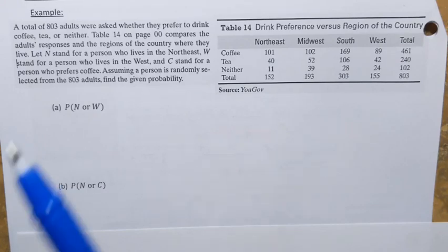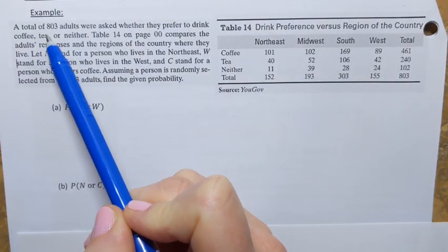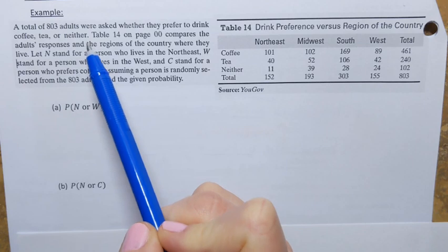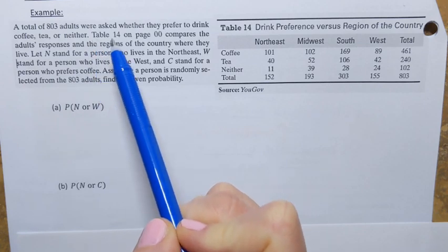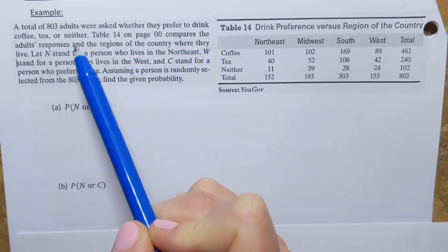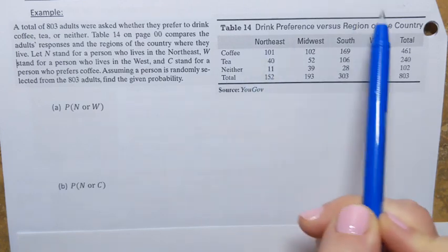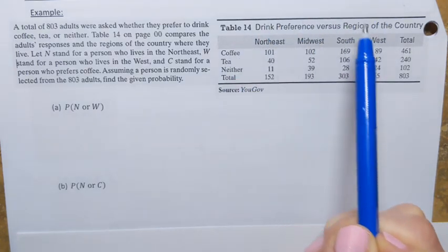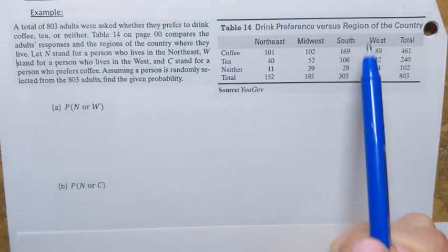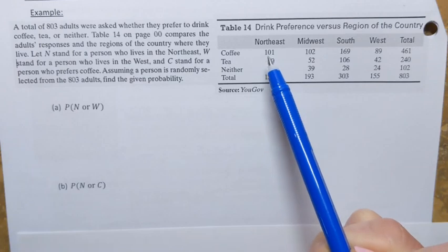We're going to look at the following example. A total of 803 adults were asked whether they prefer to drink coffee, tea, or neither. In this table, we have their responses recorded, as well as the regions of the country where these people live.